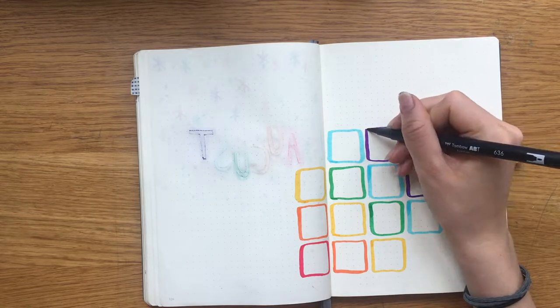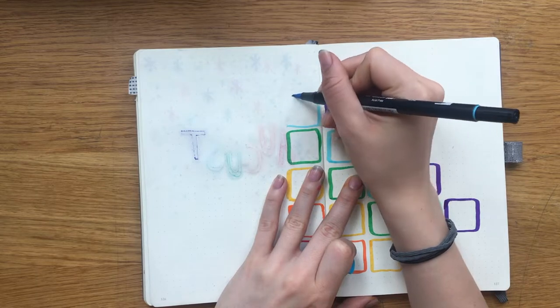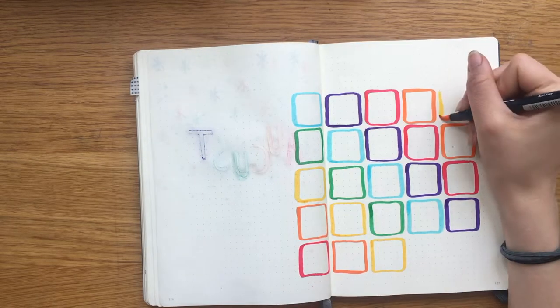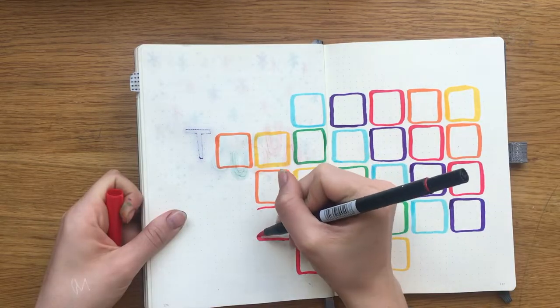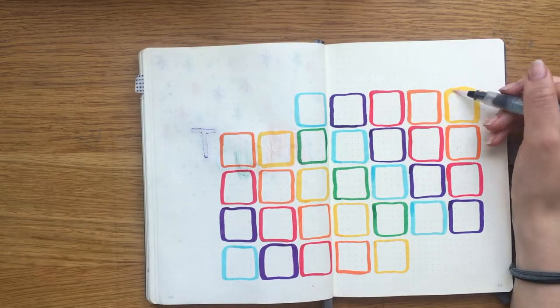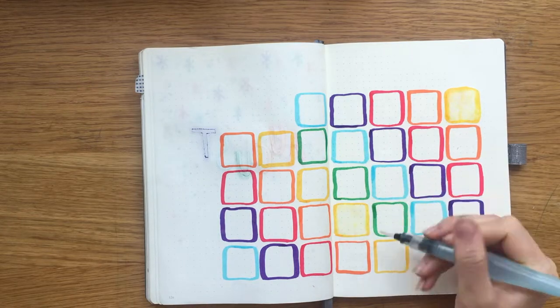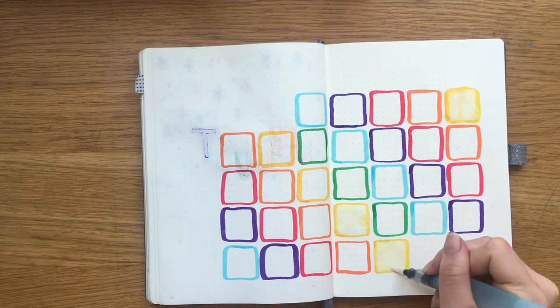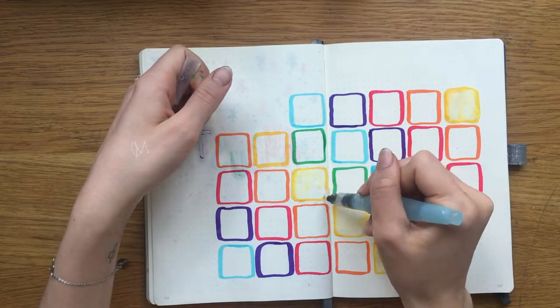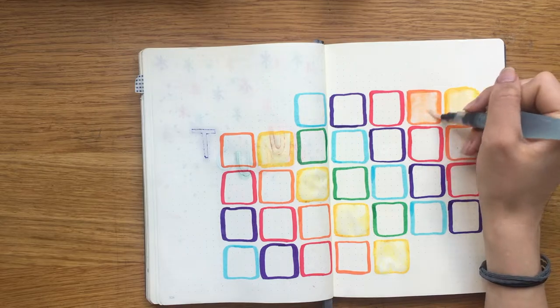So what I'm doing is I'm giving every day its own box in the rollout of the rainbow and then I am blending out the color inward to fill the box with color as well but a more watered down version. And honestly I didn't think it would work this well but it turns out great and exactly as I'd hoped.